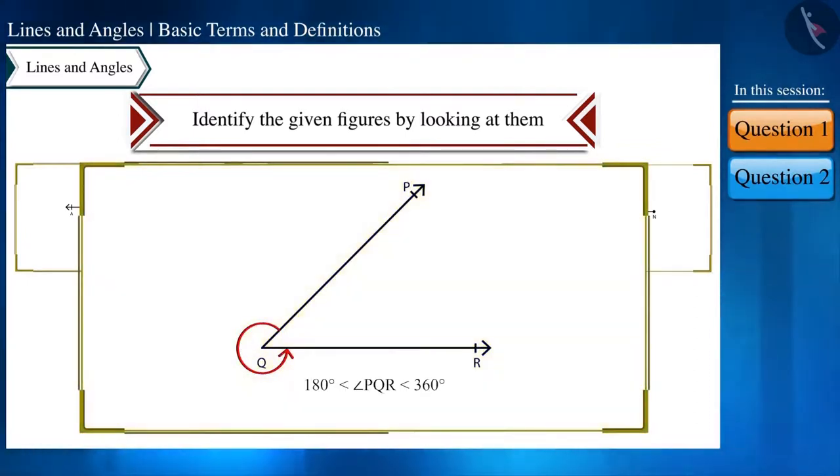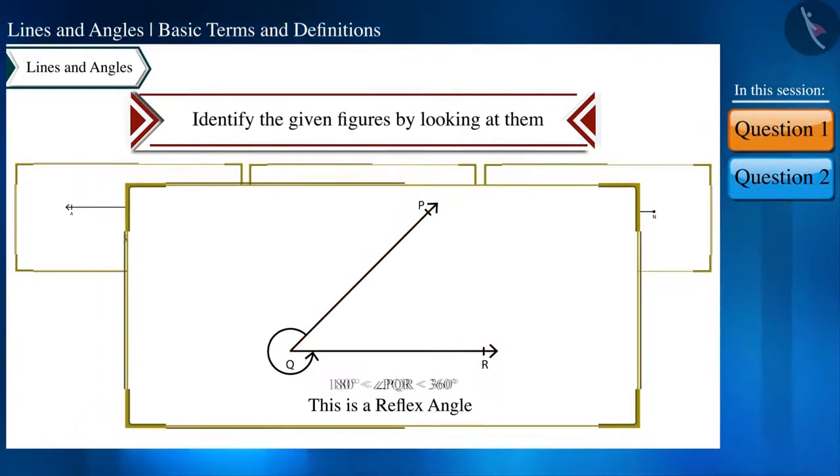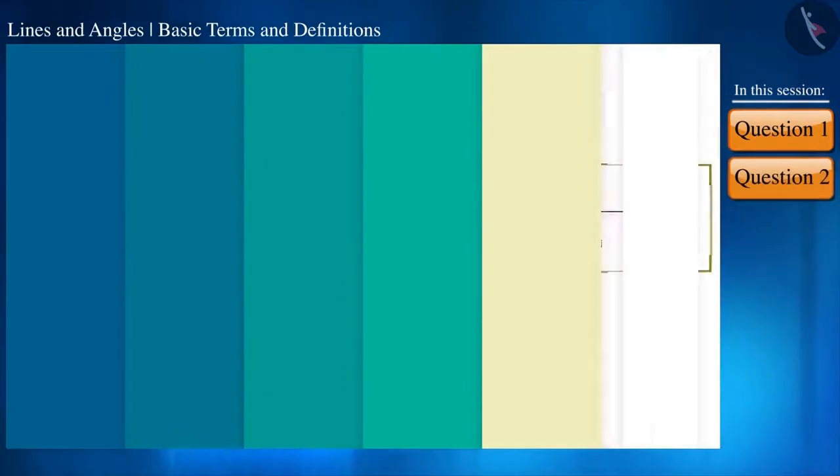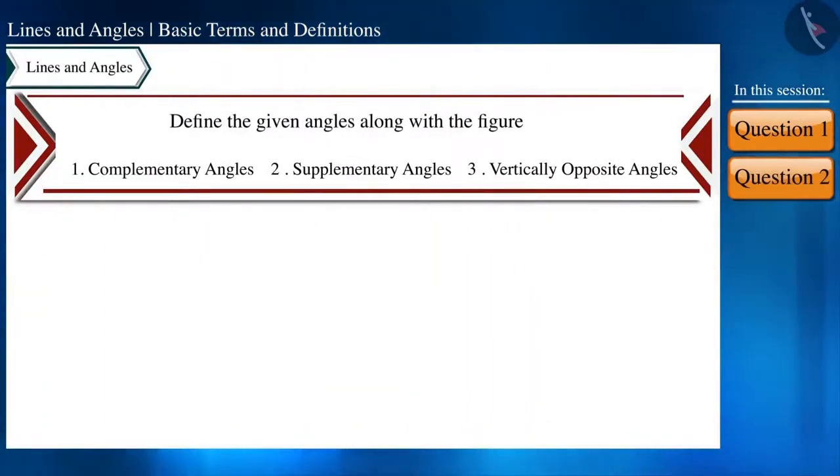Friends, in the next figure also an angle is given, angle PQR, and its measure is more than 180 degrees. Therefore we can say that this angle is a reflex angle. Let's move ahead and see the second question: define the given angles along with the figure.